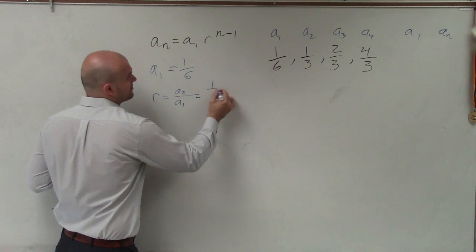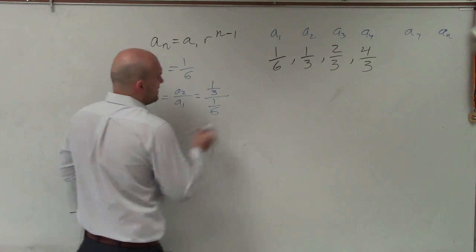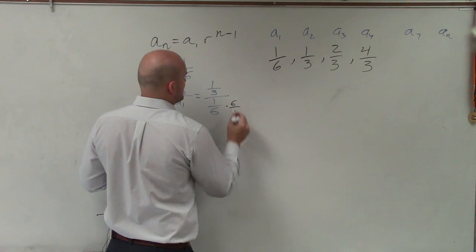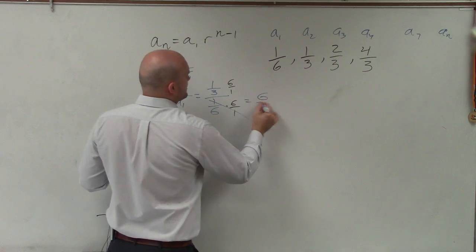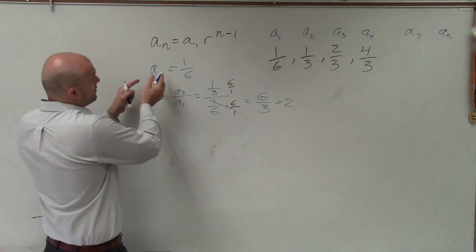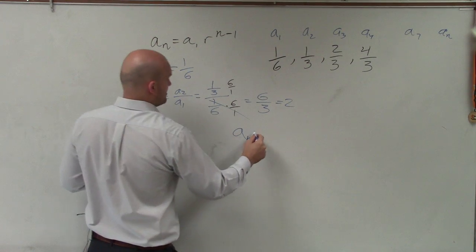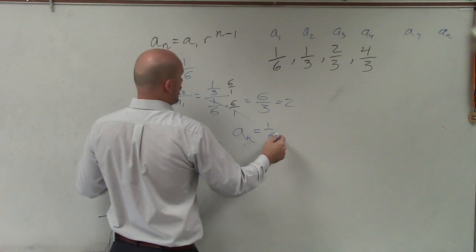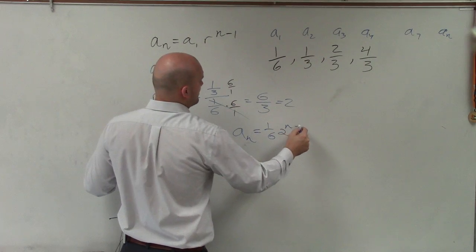So in this case, I have 1 third divided by 1 sixth. Simplify that — I will multiply by my reciprocal. That goes to 1, and we're left with 6 over 3, which equals 2. So now I know what r is and what a sub 1 is. I'll just plug it into our formula: a sub n equals a sub 1, which is 1 sixth, times r, which is 2, raised to the n minus 1.